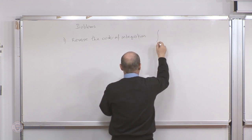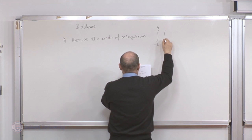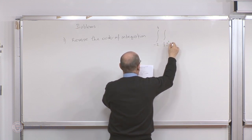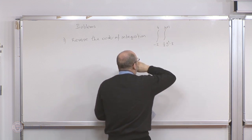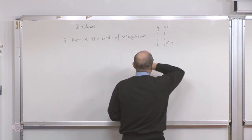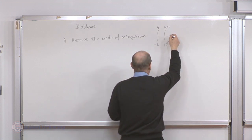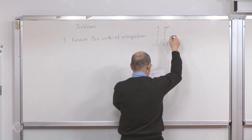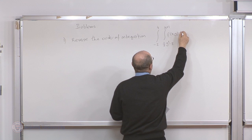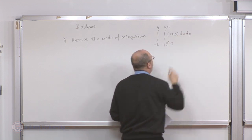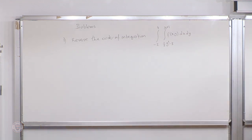The integral is from minus 2 to 4, from one-half y squared minus 3 to y plus 1 of f(x, y) dx dy. This is an exercise in reversing the order of integration.